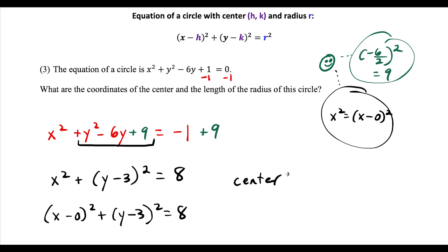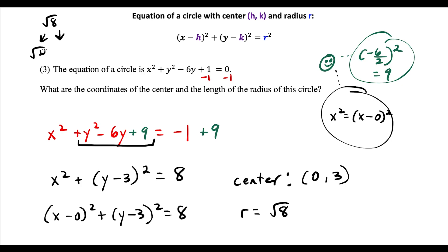So the center is (0, 3), because x minus h and y minus k come from a center of (h, k) — there's an opposite relationship. The radius equals the square root of 8. In simplified form, the square root of 8 is the square root of 4 times the square root of 2, which equals 2 square root 2.